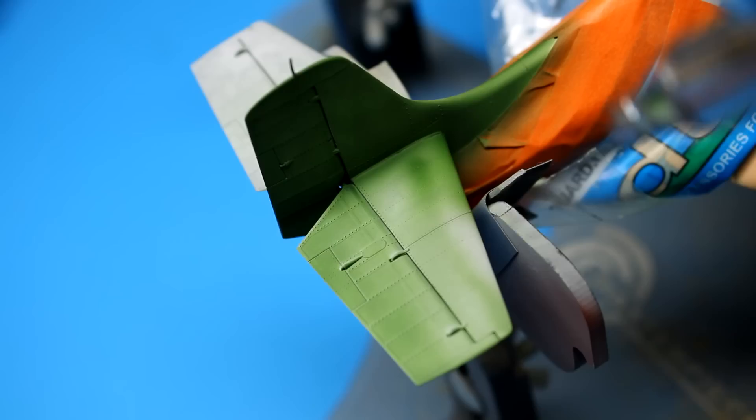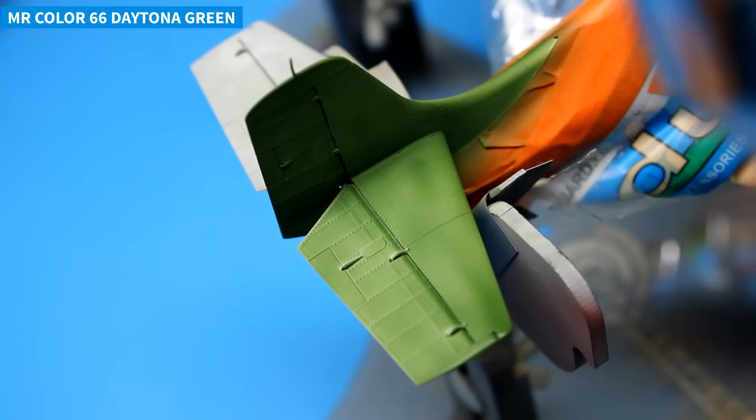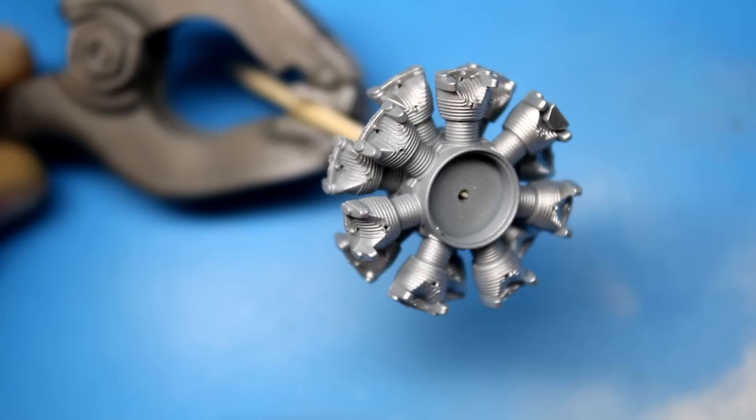After the fuselage was painted silver I then moved on to painting the tail in that bright green. You'll notice that I also didn't go too crazy weathering this paint because this scheme was only used for a few months before the US Navy moved over to the neutral gray.